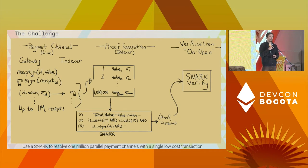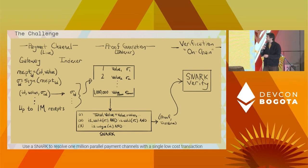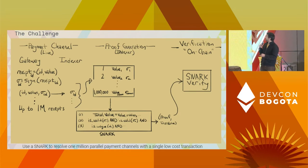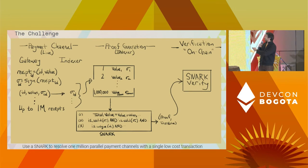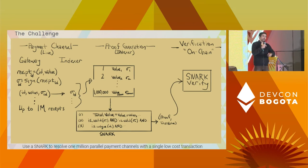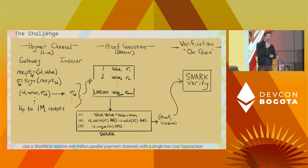For the indexer to prove they're owed the total amount, they need to prove that all 1 million receipts have valid signatures, that none of the receipts have been repeated, and that the total value adds up to what they claim they're owed. One way they could do this is just take that bundle of a million receipts, throw it on-chain, and run BLS signature verification on all 1 million receipts. But that's a little costly, so we want a better solution.